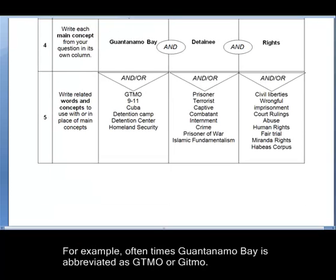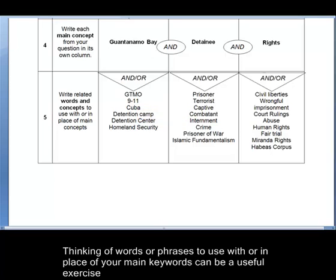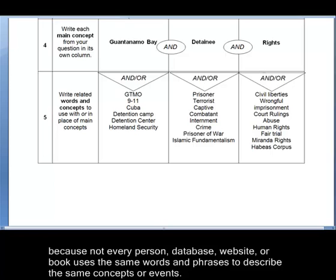For example, oftentimes Guantanamo Bay is abbreviated as GTMO or Gitmo. And instead of using detainee, prisoner, captive, or combatant could be used. Thinking of words or phrases to use with or in place of your main keywords can be a useful exercise because not every person, database, website, or book uses the same words or phrases to describe the same concepts or events.